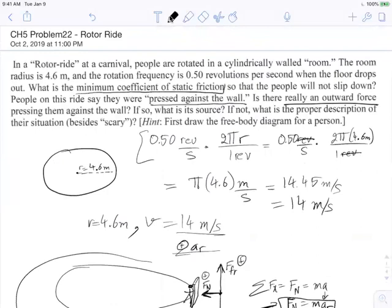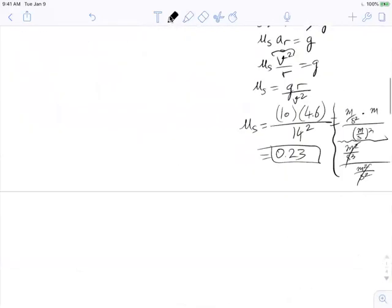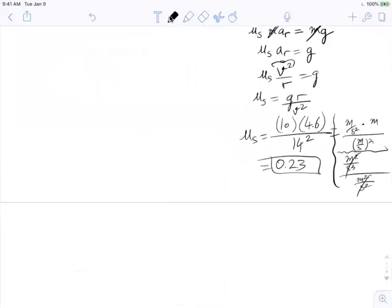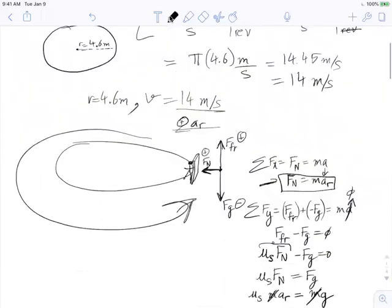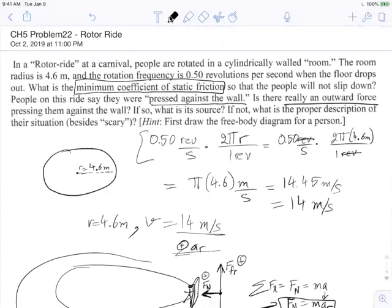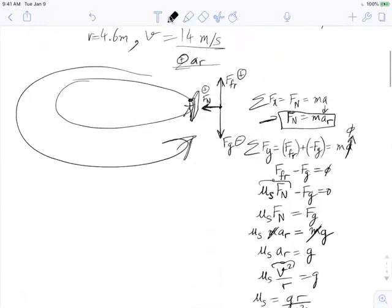For maximum happiness at a fair, please provide the static coefficient of friction of 0.23. Next part is: is there really an outward force pressing people against the wall? If so, what is the source? If not, what is the proper description of the situation? This is subjective, and I would say that the inertial path—the tendency of something traveling in a circle—it always wants to go this way, but then there's slight changes in its direction and it ends up being forced into a circle.